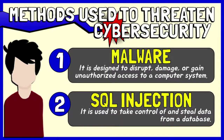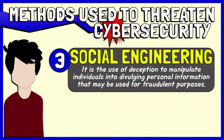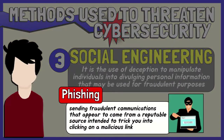SQL Injection is a type of cyber attack used to take control of and steal data from a database. Cyber criminals exploit vulnerabilities in data-driven applications to insert malicious code into a database via a malicious SQL statement. This gives them access to the sensitive information contained in that database. Social Engineering is a manipulation technique that exploits human error to gain private information, access, or valuables. It tends to lure unsuspecting users into exposing data, spreading malware infections, or giving access to restricted systems. One of the methods used for social engineering on the internet is phishing — the practice of sending fraudulent communications that appear to come from a reputable source, intended to trick you into clicking on a malicious link or attachment. It is usually performed through email, with the goal of stealing sensitive data like credit card and login information, or to install malware on the victim's machine.